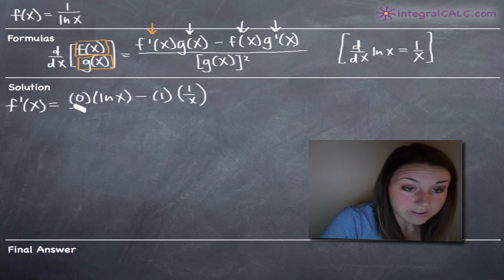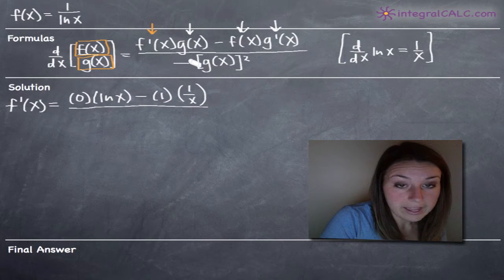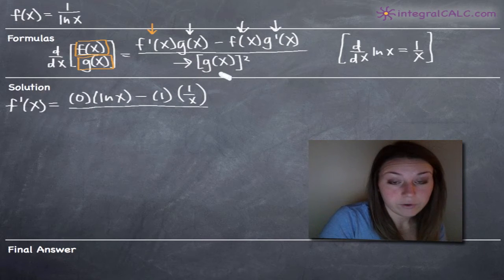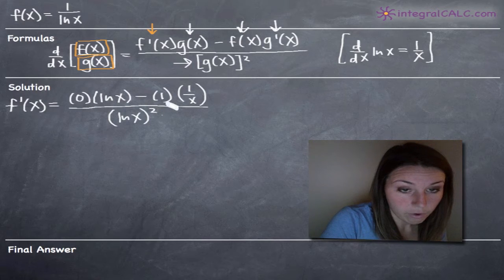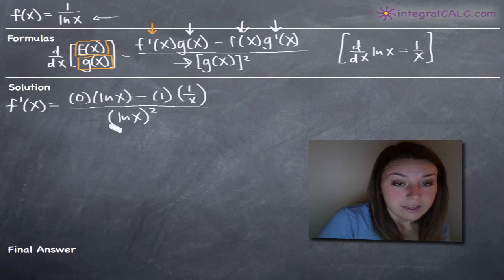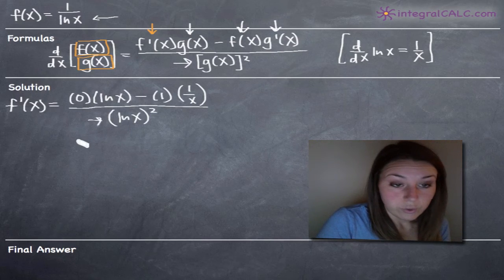Then we're going to be dividing this whole thing by g of x squared, in other words by our denominator squared. So we go ahead and write ln of x and we're going to be squaring the whole thing because we grabbed our denominator, put it in here and we're squaring it.